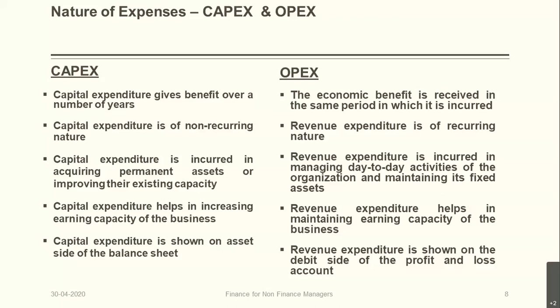Operating expenditure (OpEx): the economic benefit is accrued in the same period. For example, salaries paid for March benefit you in March. Revenue expenditure is of a recurring nature — you pay salaries month on month, utility fees month on month. Revenue expenditure is incurred to manage day-to-day activities and maintain earning capacity, including fixed asset repairs and maintenance. CapEx increases your earning capacity, whereas revenue expenditure maintains it. Revenue expenditure is shown on the debit side of the profit and loss account.